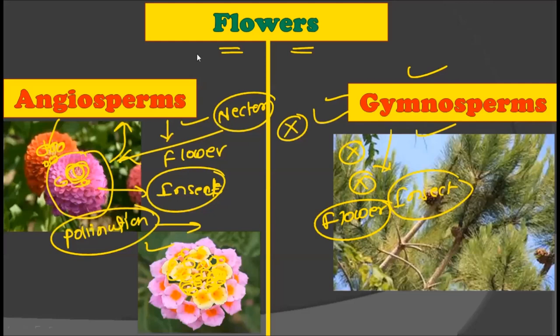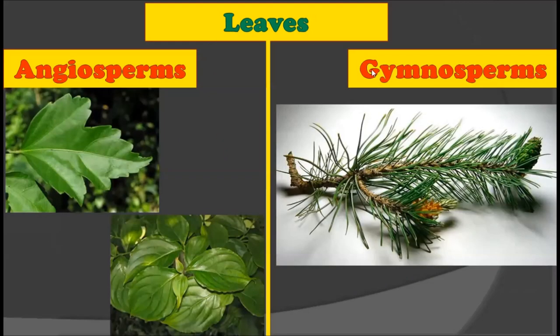Flowers again distinguish gymnosperms from angiosperms — flowers give the evolutionary advantage to the angiosperm, while gymnosperms are lacking them.